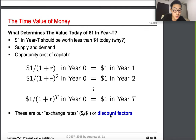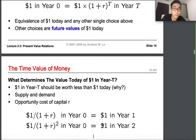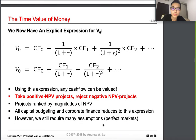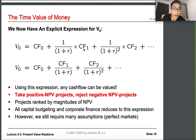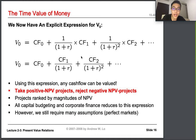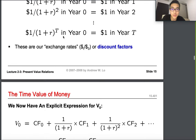Now the time value of money — we have an explicit expression for V0, which is our present value. We take CF0 as the cash flow, divide by (1+r) which is our exchange rate, and repeat this step over and over again. That's how we find how much value in the future is worth today.